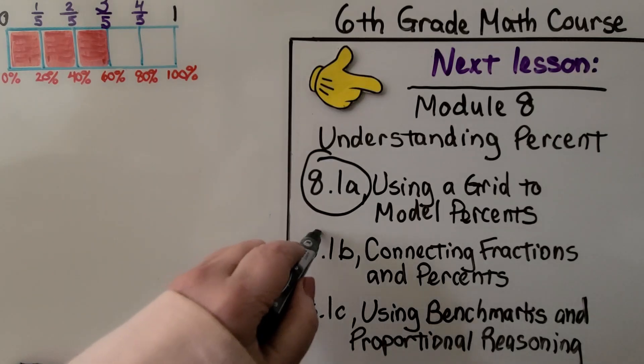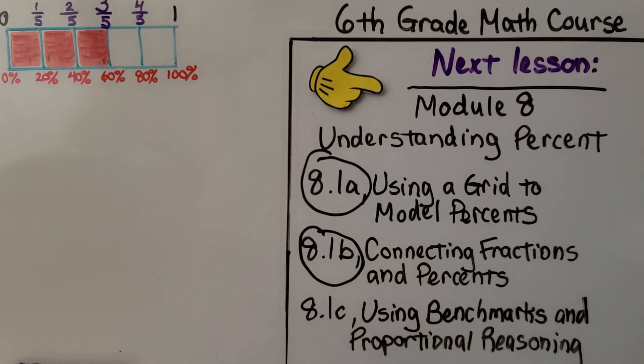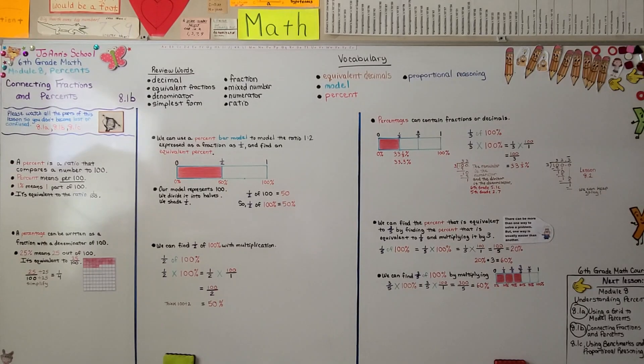So now we've finished this lesson, and we're going to move on to the last part of 8.1. We're going to talk about using benchmarks and proportional reasoning. Do you remember working with benchmarks in 4th and 5th grade? It's like it's a familiar number that we use as a point of reference. So I hope you'll join me for next time, and I hope you have a really nice day.